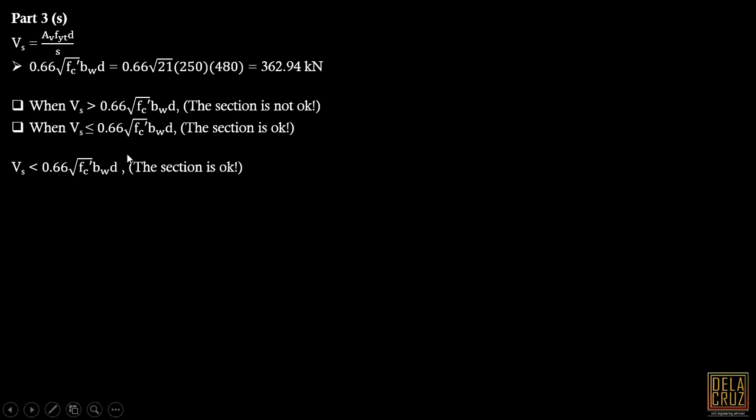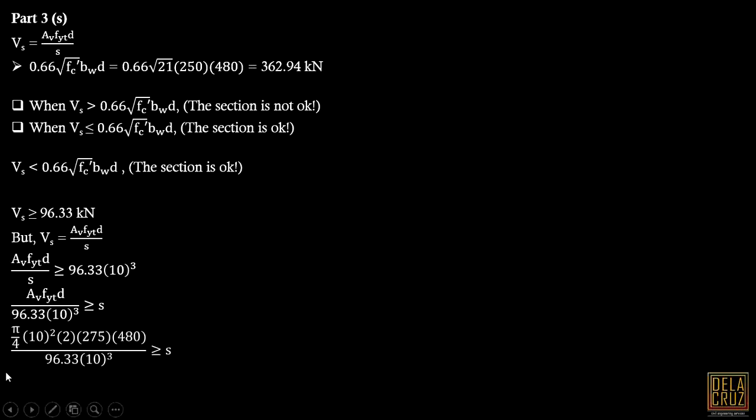After checking that, we can use this equation above to check the value of spacing. We know that Vs is greater than or equal to this value, but we know Vs is that formula. We will substitute this Vs here for that equation. Times 10 to the power of 3 to make it newtons. Cross-multiplying that, then substituting all the values, Av is pi over 4 times 10 squared times 2, Fyt times effective depth. We can get the value of spacing here.